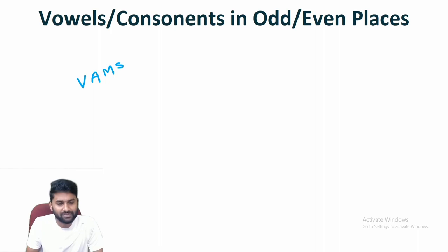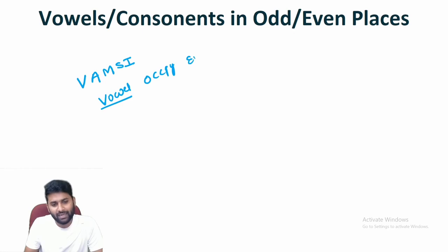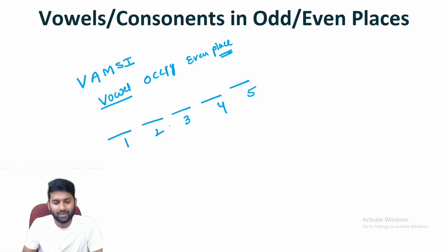Let's take the word WOMC. The condition says that out of WOMC, vowels must be occupied in even places only. Now, we have five different positions. Out of five different positions, we have two even positions. Out of those two even positions, we have to place only vowels — A and I.